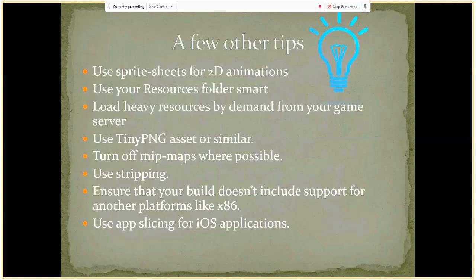A good idea is also to turn off mipmaps where possible. By default, Unity generates mipmaps for your textures and sprites. For example, if you have a static camera that won't zoom in or zoom out, you don't need mipmaps to be generated and can turn them off. Every mipmap consumes additional size, and the bigger your original texture resolution is, the more mipmaps will be generated and the more additional size will be consumed.